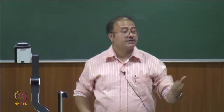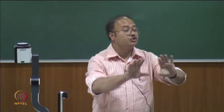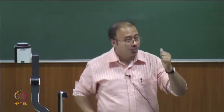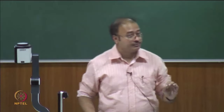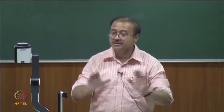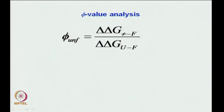Why is it a delta-delta? Because if you are taking one protein — the wild type — it is delta G‡ minus F. But now you are comparing two proteins. In one protein it is the wild type, meaning no changes in the amino acid sequence. In the other protein you have made a mutation, and hence the difference between these two delta G values is referred to as delta-delta G.